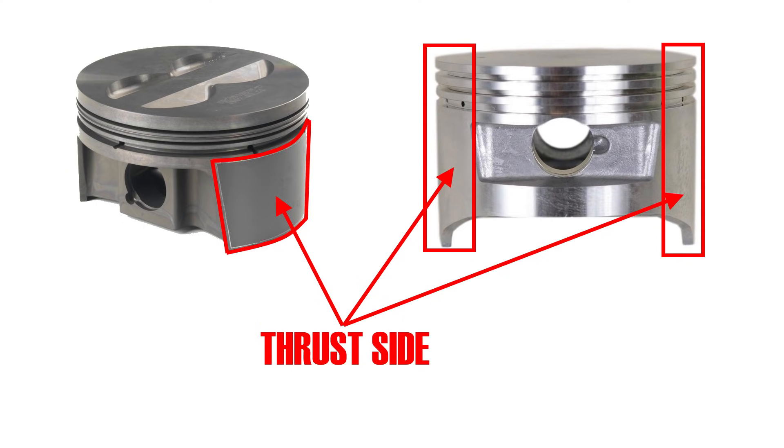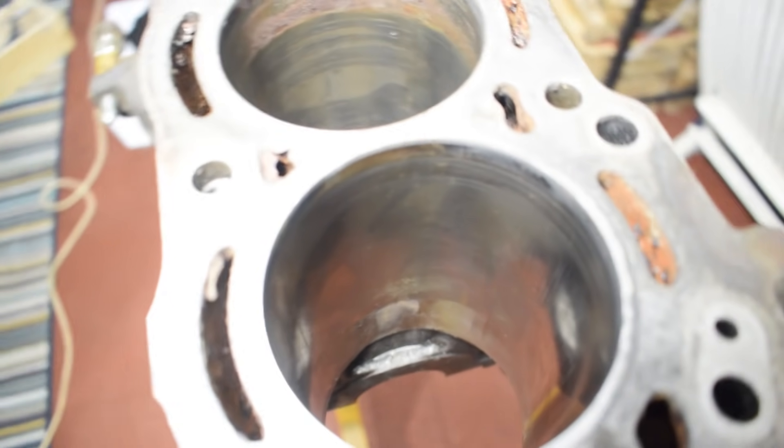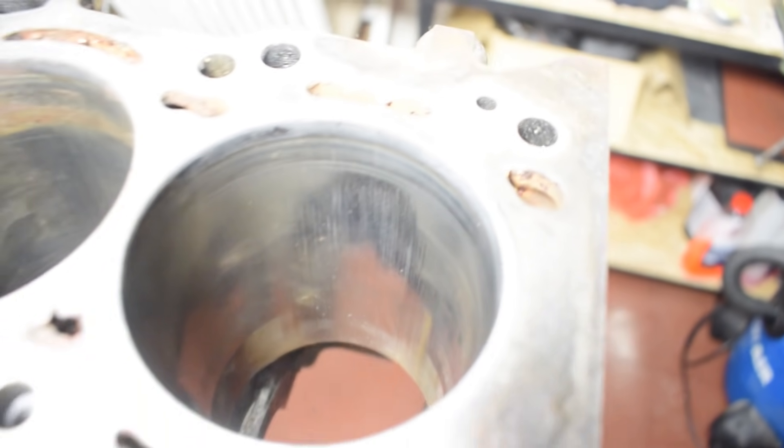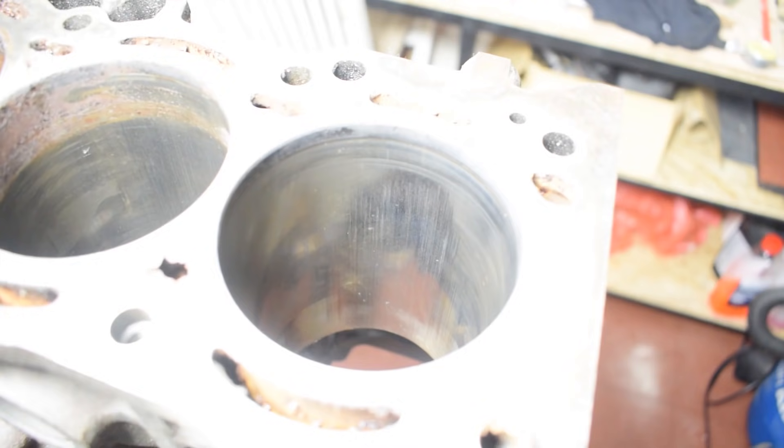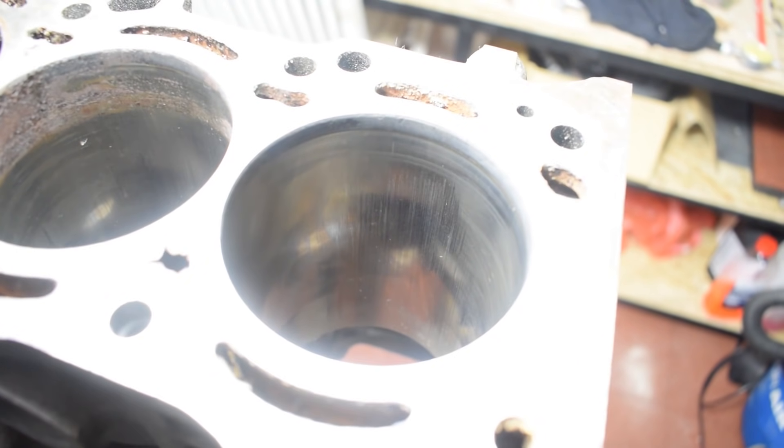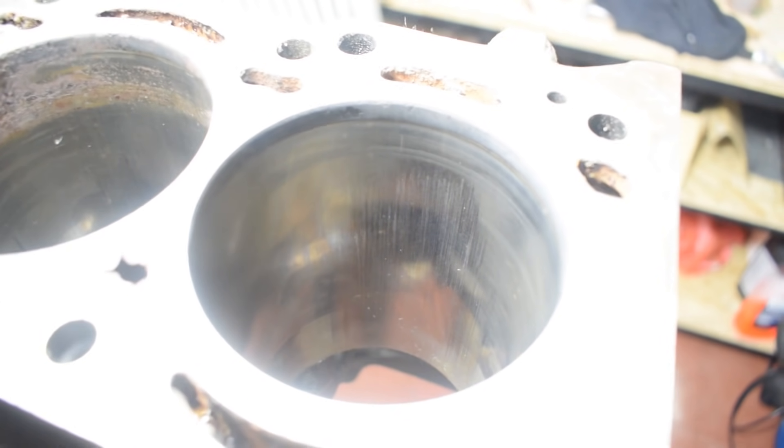This is also why pistons have more skirt material along their thrust axis. More skirt along the thrust axis helps better support the piston and the bore and helps distribute loads. So cylinder one has an absence of serious damage and even some presence of honing marks which means that it passes visual inspection but it does raise some concerns over increased wear.